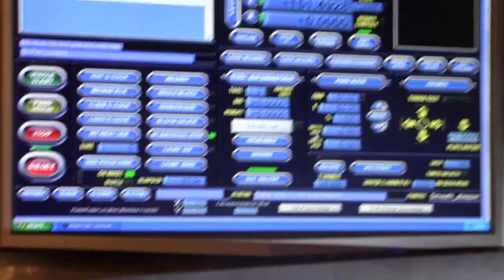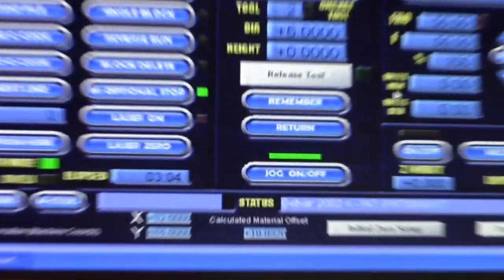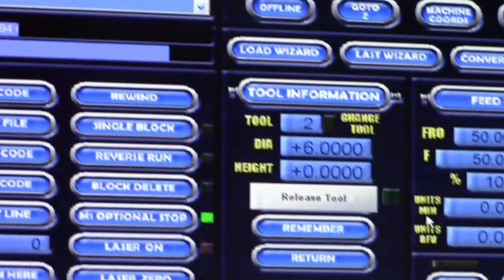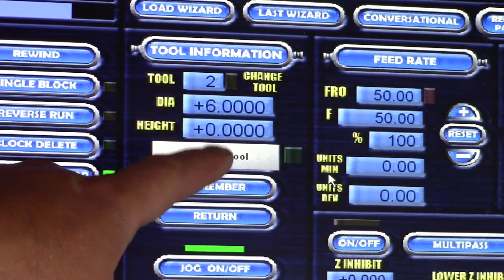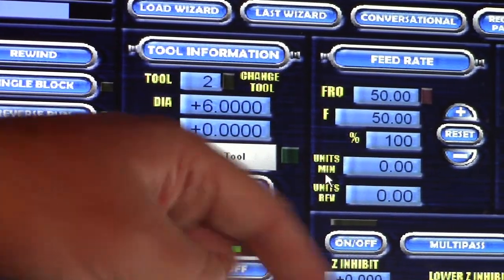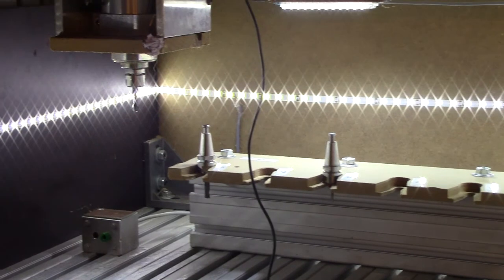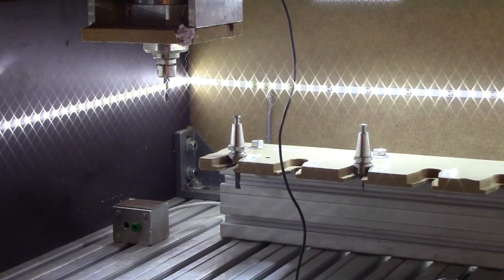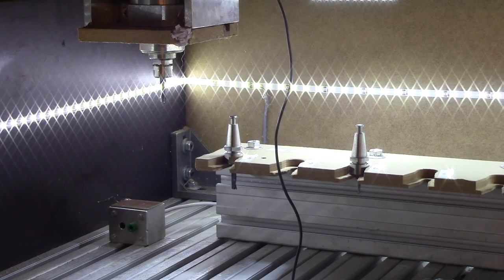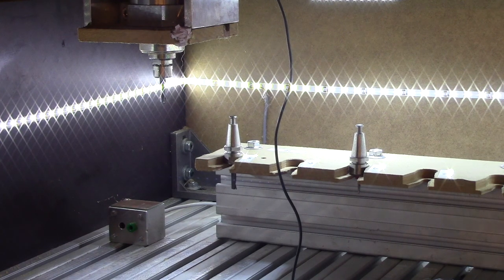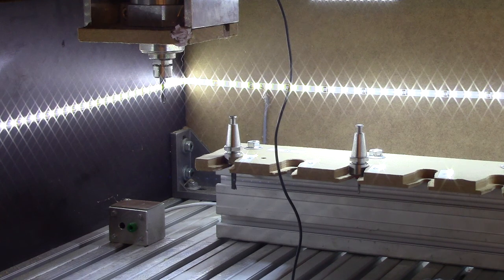So we should be able to see on the screen that my height right now for this tool number two that is in the holder is zero. So once it's completed, we should be able to see what the height will be. So let's try and make it run, I'll need to call my tool change program, and here we go.